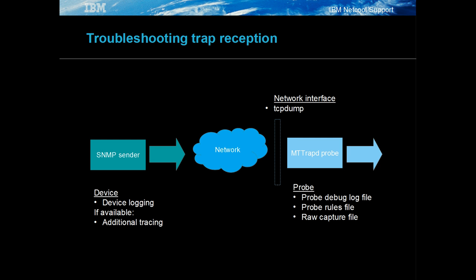You can troubleshoot trap reception at a number of points within the system. It is important to determine where the problem of trap loss is occurring before investigating further. You can use TCP dump to check for missing traps that arrive at the probe's port but are never seen in the logs or raw capture files. You can also log specific trap tokens for all traps in the log file so that gaps in the trap reception can be identified without debug logging.